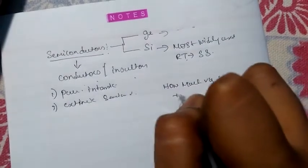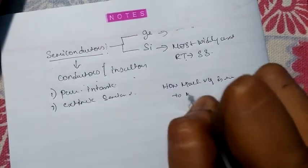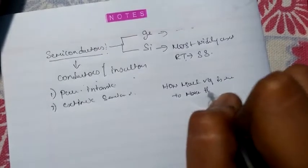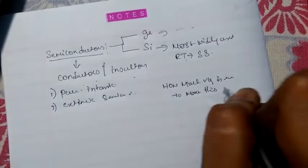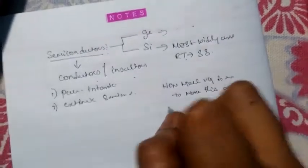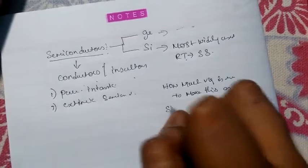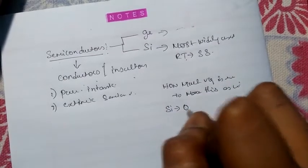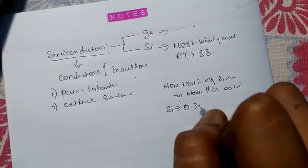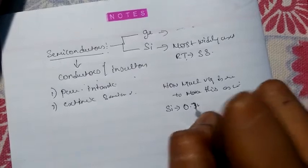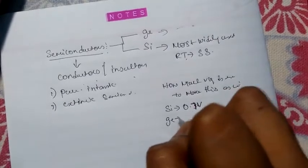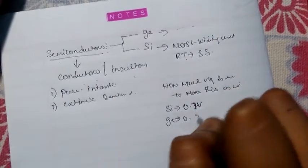In case of silicon, it requires 0.7 volts to make it act as a conductor, and in case of germanium it requires only 0.3 volts.